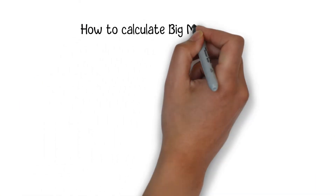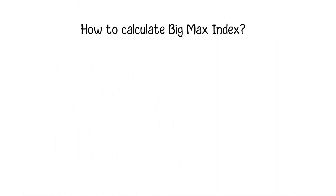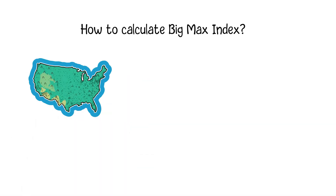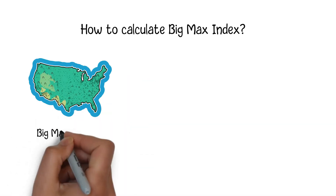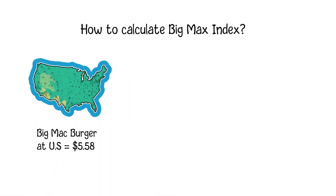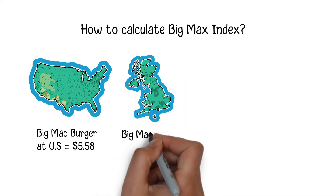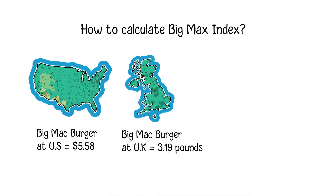Although the Big Mac Index is never considered as a precise economic indicator to measure the exchange rate, it quickly becomes a global standard for price comparison due to its simplicity. For example, as mentioned by The Economist magazine, in 2019 people will pay $5.58 to buy a Big Mac in the US and £3.19 for the same burger in the UK.